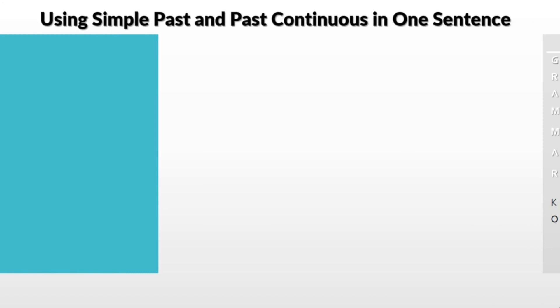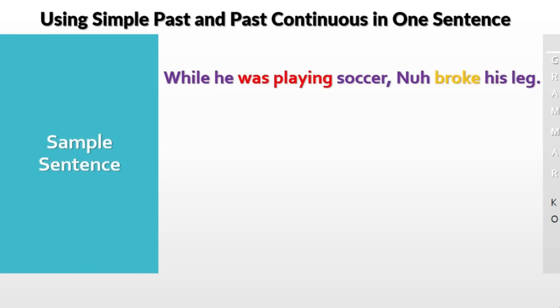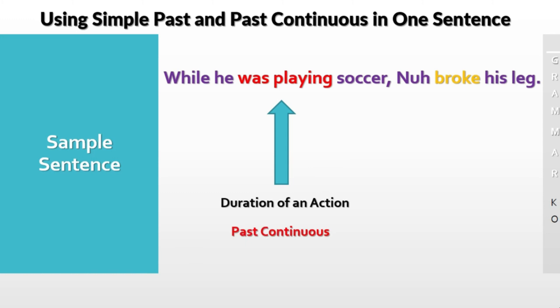Let's use the simple past and the past continuous in one sentence. For example: 'While he was playing soccer, Nuh broke his leg.' Here 'was playing' is the duration of an action — the past continuous. 'Broke' is an irregular past tense verb that interrupts the action, so we call it the simple past.